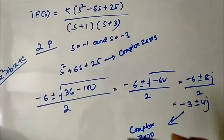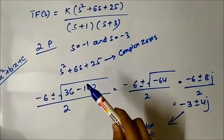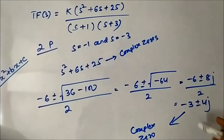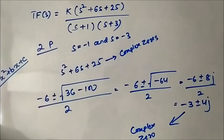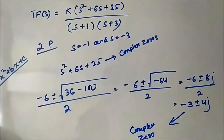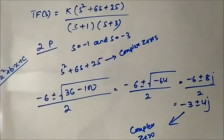So we have discussed both simple poles and zeros, and complex poles and zeros. A complex pole or zero consists of a real part and an imaginary part. Transfer functions can have poles and zeros that are either simple or real, or complex.